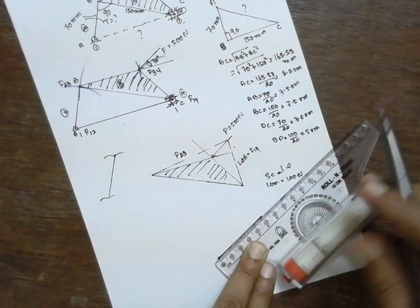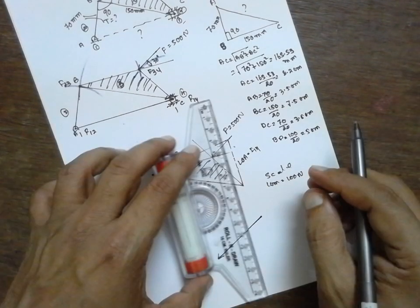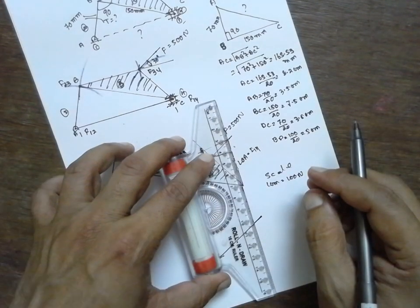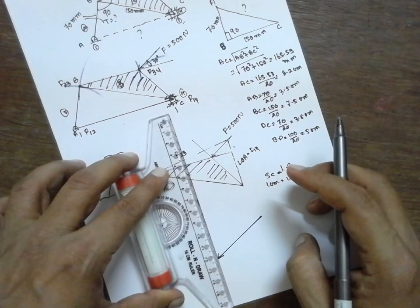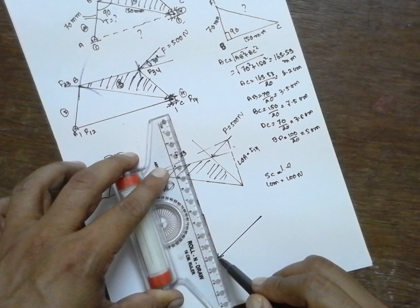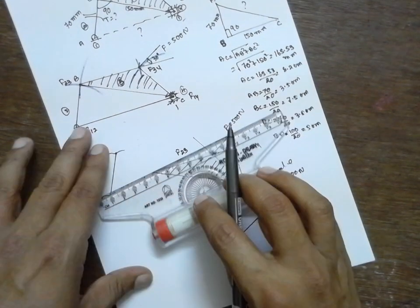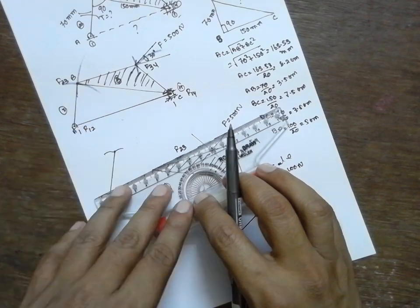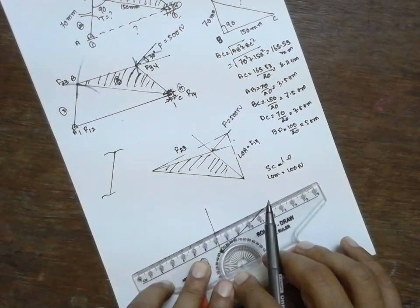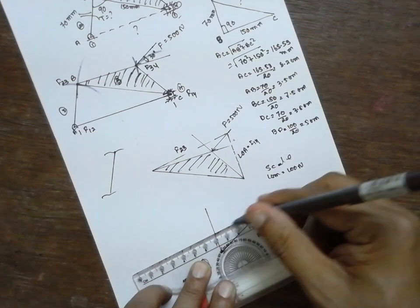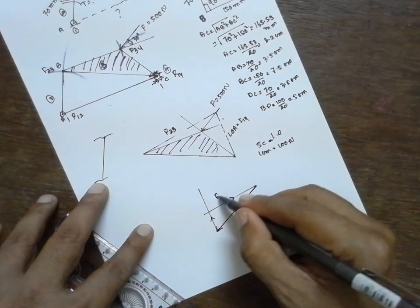Next, I will draw this F14. Either you can draw here or you can draw here, no problem, you will get the same answer. Next, F, this part I will draw in this direction. As the arrow is here, the next arrow will be here. This will be F23, this is F14.